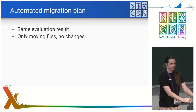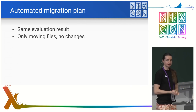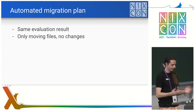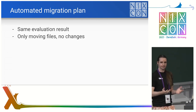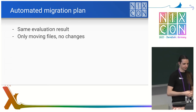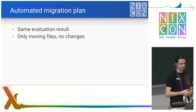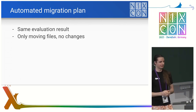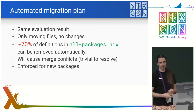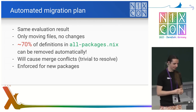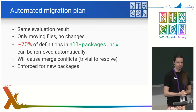I'll briefly talk about what's planned next. This is the migration of the packages, because most packages are still defined in all-packages.nix but they shouldn't have to be. The next step is to change that, and we want it to be as automatic as possible. We need to guarantee the evaluation result is the same so packages won't be broken, and we only want to move files — not change any files. By my estimation, we should be able to move about 70% of definitions automatically outside of all-packages.nix, so you don't have to worry about doing this yourself.